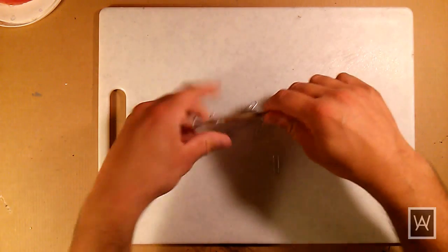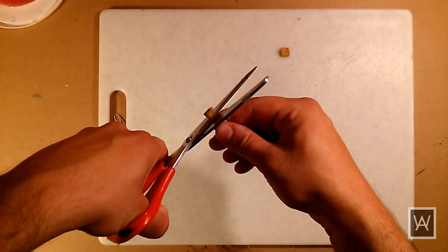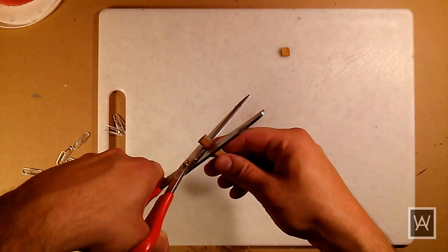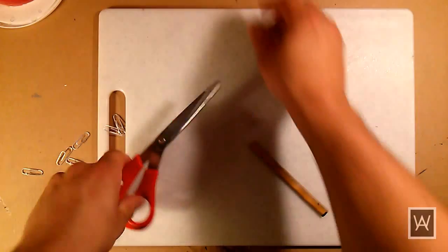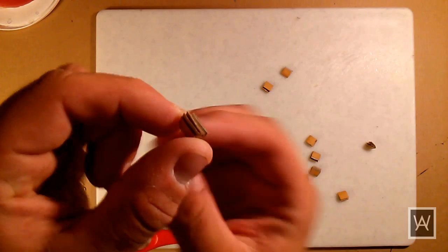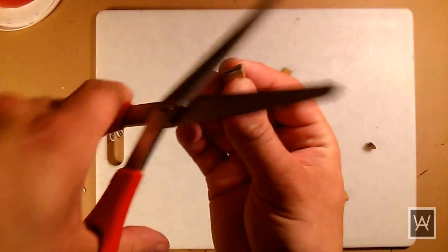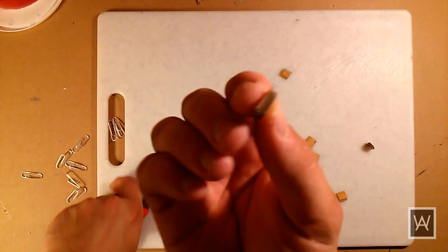Now chop pieces off to make books. You could measure it out, but this is easy enough to eyeball. Now you may or may not see this happen. The inner pages stick out too far. I just trim them down with scissors.